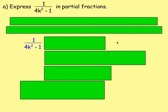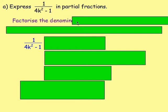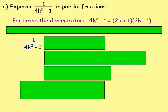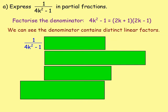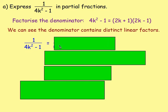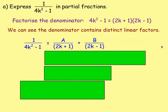Part A: express 1 over 4k² − 1 in partial fractions. The first thing you have to do is factorise the denominator, which gives you (2k + 1)(2k − 1). You can see the denominator contains distinct linear factors, so we can write 1 over (2k + 1)(2k − 1) in partial fractions as A over (2k + 1) plus B over (2k − 1).